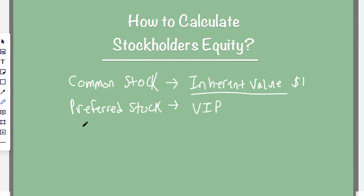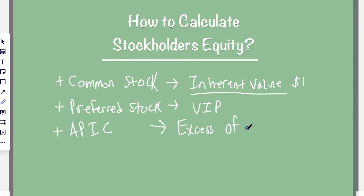So you have common stock and preferred stock. You're also going to have APIC, which you add in — these are all additions to your equity. APIC, or additional paid-in capital, is the excess amount — the amount over the stated value. So if your stated rate is, say, one dollar per share, but the market rate is five or ten dollars per share, APIC is that difference, and you get to add that in.